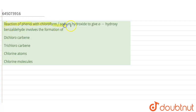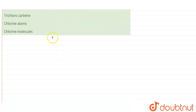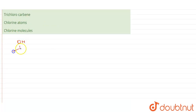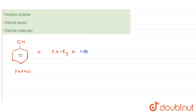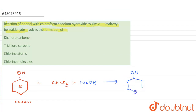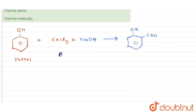In this question, it is given that the reaction of phenol with chloroform and sodium hydroxide to give orthohydroxybenzaldehyde involves the formation of which intermediate. The starting material is phenol — a benzene group attached to OH. We have CHCl3 and NaOH as reagents, forming orthohydroxybenzaldehyde, where OH is at the ortho position and CHO is the benzaldehyde group. This reaction is called the Reimer-Tiemann reaction.